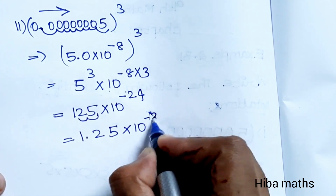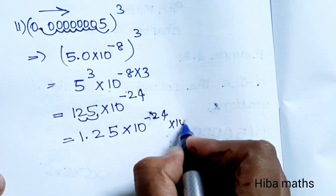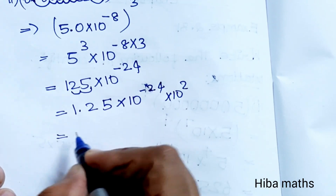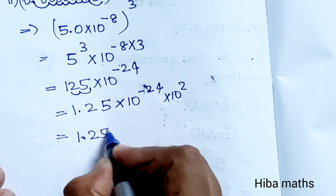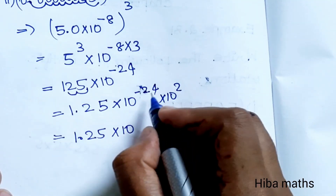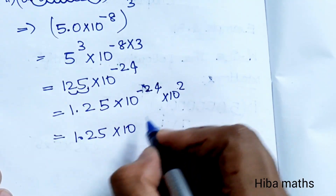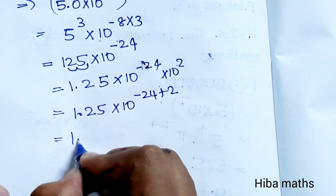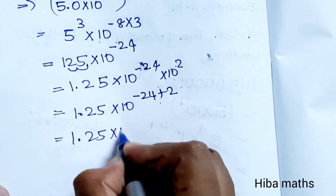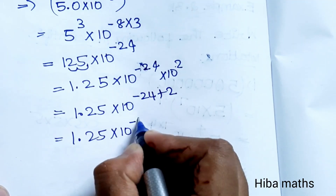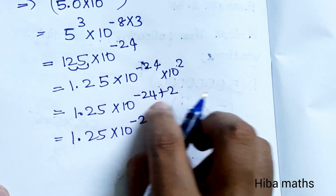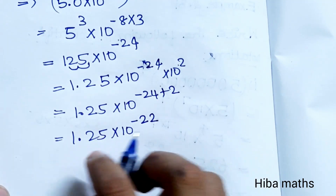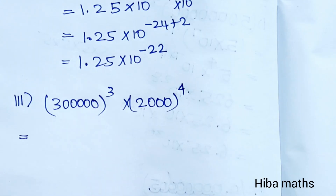Now the point here: 125 becomes 1.25 into 10 power 2. So 1.25 into 10 power minus 24 into 10 power 2 — this is plus 2. Answer: 1.25 into 10 power minus 22, because minus 24 plus 2 equals minus 22. Add the sub-division.